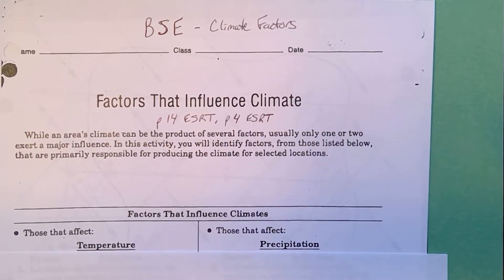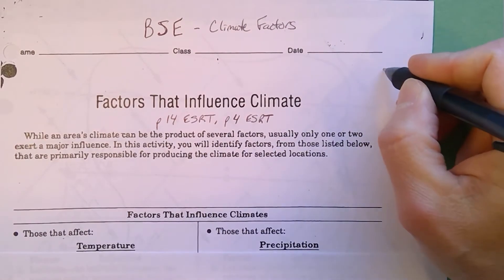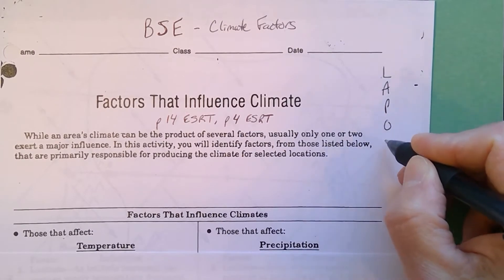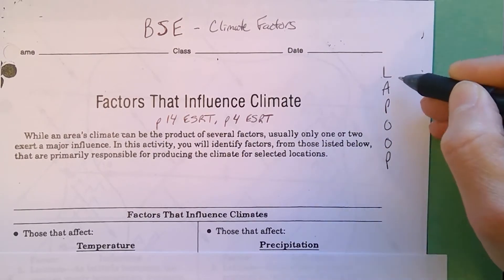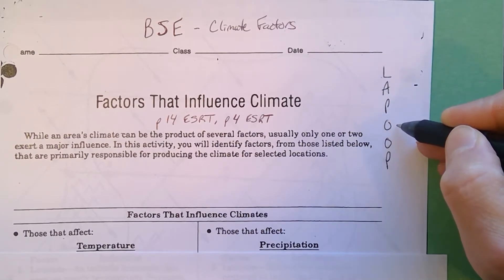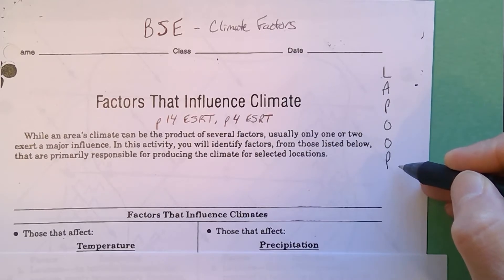Our mnemonic that we have played with for climate factors, and it's one of those things that you should use to help you, is LA POOP: Latitude, Altitude, Proximity to water, Ocean currents, Orographic effect, and Planetary wind and pressure belts.